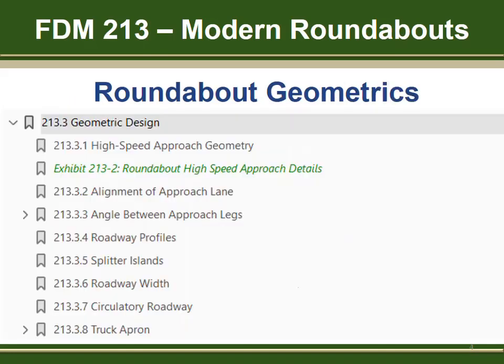Here is the list of subsections for FDM 213.3 illustrated by a screen capture of the bookmarks. This section begins with a general discussion of roundabout features, including the proper use of chicaning. Chicaning should be used only to the extent necessary to establish the splitter island and create an offset left alignment. There are also requirements for the inclusion of tangents between the reverse curves.